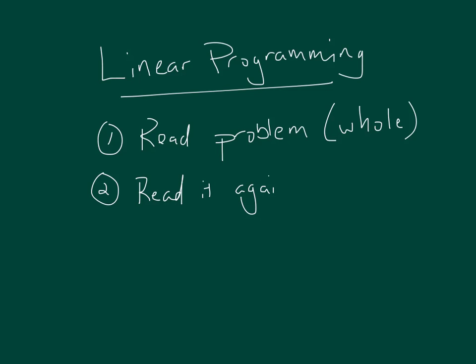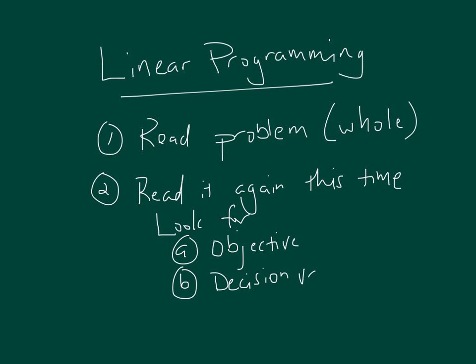Read it again. This time, look for very specific things. Look for what your objective is - often maximize profit or revenue, or minimize cost or time. Think about what your decision variables are. A decision variable is basically anything that the decision maker has control over. For example, if I'm doing a product mix problem and I'm a company that makes five different products, I'd have one decision variable for each product type. The question would be how many of each product should I produce to maximize revenue.